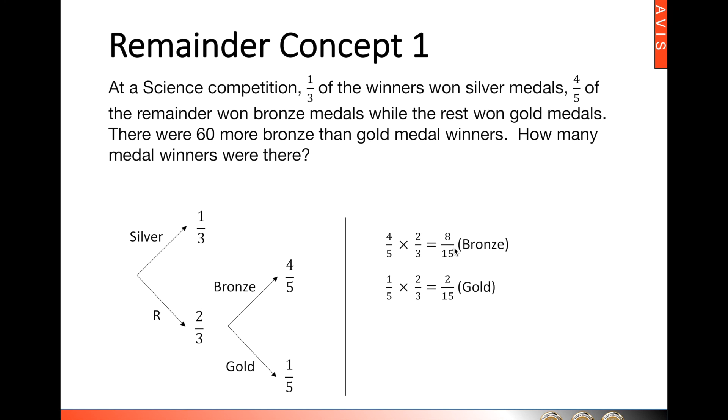Now what we need to do since we are talking about the difference here, the sixty is the difference between bronze and gold. So we are going to subtract the fraction for bronze and gold medal winners. So in this case eight over fifteen minus two over fifteen that will give us six over fifteen. Alright. Now some students will say that six units is sixty and one unit will give us ten. Fifteen units all together that will give us one hundred and fifty. Alternatively we could take the number sixty and divide it by six over fifteen and this will give us one hundred and fifty. So this is how we normally solve remainder concept one questions.